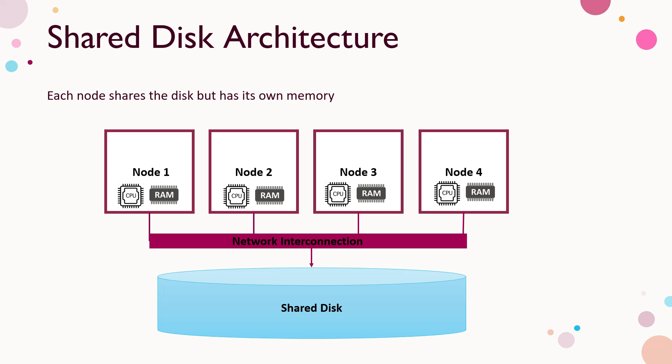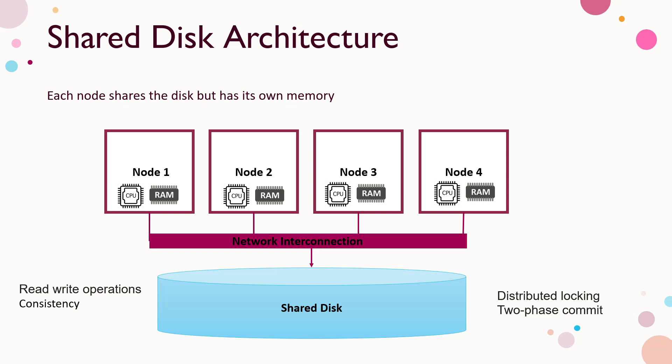First, let's recap shared disk and shared nothing to understand how Snowflake is hybrid. In shared disk architecture, each node has its own CPU and memory but shares the storage. There is a network connection between the nodes and they all share a common disk. The benefit is that read-write operations are consistent because it's not distributed storage. But it brings complexity like distributed locking or two-phase commit.